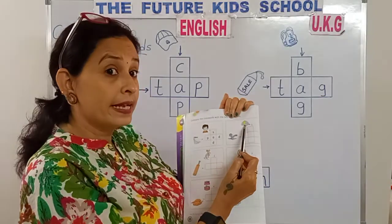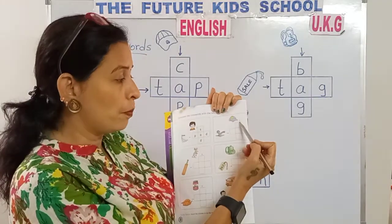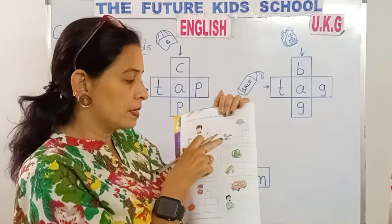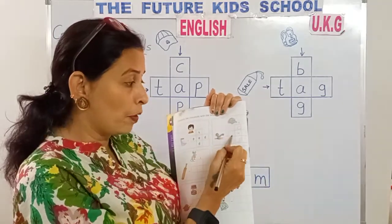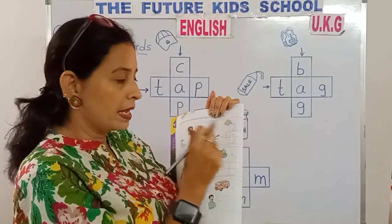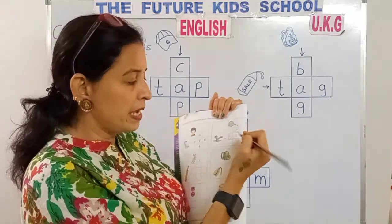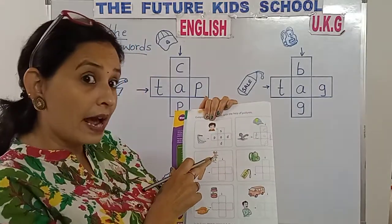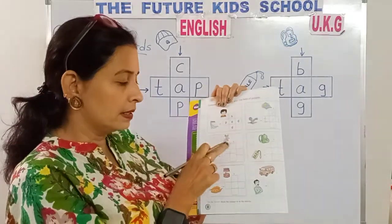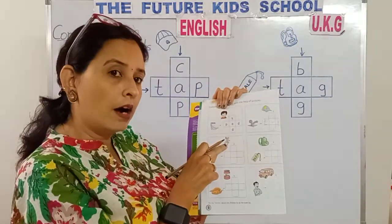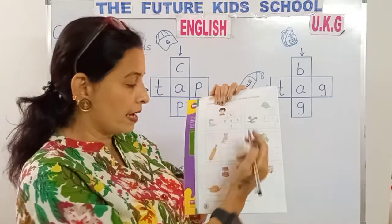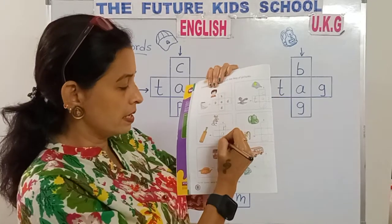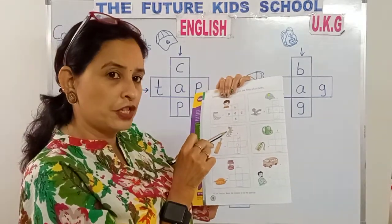Look here. This is cap. See the arrow pointing down? C-A-P. Cap. This is a tap. See the arrow pointing this side. T-A-P. Yes. This is a rat, children. Look at the arrow pointing this side. Rat. R-A-T spells rat. R-A-T. Rat. Look at the picture, children.